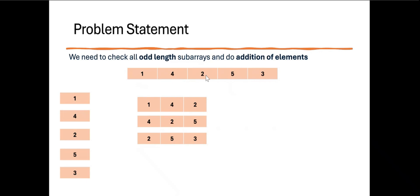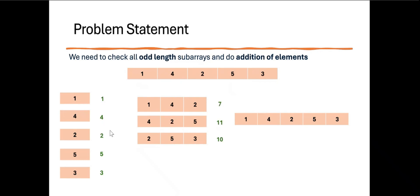The subarrays with length 5 is the original array itself, which is also a subarray. We need to do the sum of all elements in each subarray — for a single element subarray we just write the number; for length 3, 1 plus 4 plus 2 equals 7, 4 plus 2 plus 5 equals 11, and so on. We need to return the total of all these sums, which is 58. That is the problem statement.